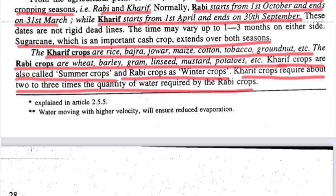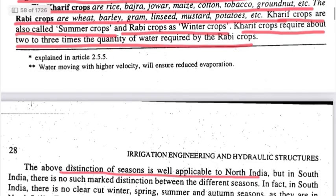You can grow cash crops in both seasons. Kharif season crops include Rice, Bajra, Jowar, Maize, Cotton, Tobacco, and Groundnuts. Rabi season crops include Wheat, Barley, Gram, Linseed, Mustard, and Potato.